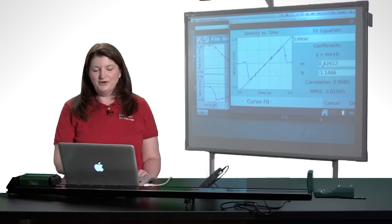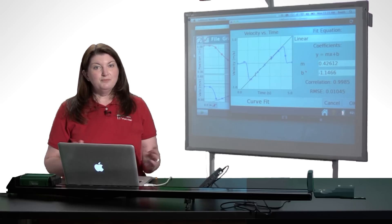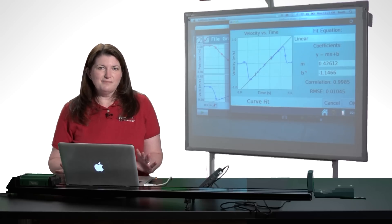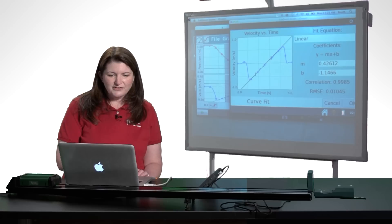So their slope was 0.42 meters per second squared. That's their acceleration. We probably know from that data that their track was at a steeper angle than mine was. We can talk about the differences between those. So it's a really convenient way. You can go back and forth very easily.